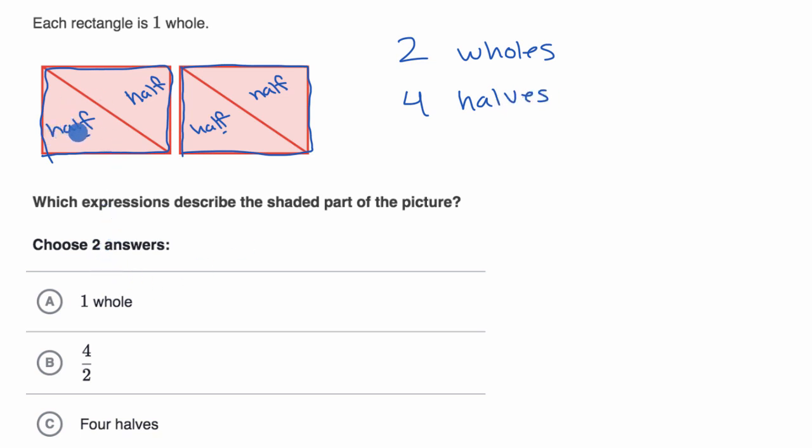Or instead of writing a half out like that, you could also represent a half like that. One half, that's another one half, that's another one half, that's another one half. And how many of these halves do we have? Well, we have one, two, three, four. So how can we write four halves? Well, you can write it as four over two.